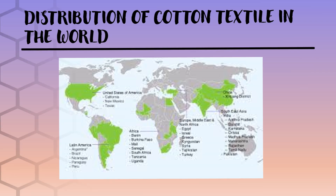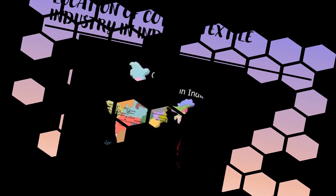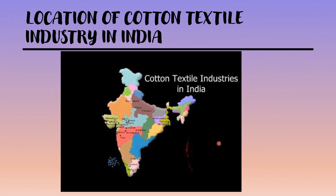India is also not behind. Several cotton textile mills are located where cotton is produced in huge amounts, which includes Gujarat, Maharashtra and Tamil Nadu. Other centers include Kanpur in Uttar Pradesh, Nagpur and Sholapur in Maharashtra, Indore in Madhya Pradesh, Coimbatore in Tamil Nadu, and Delhi, our national capital.